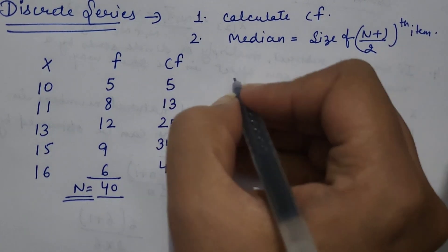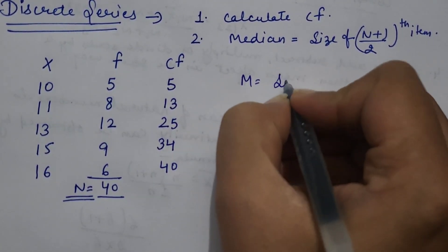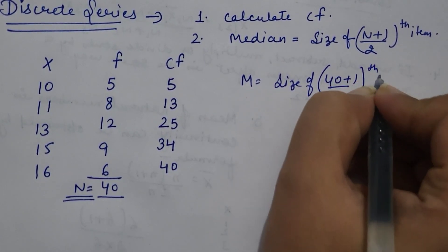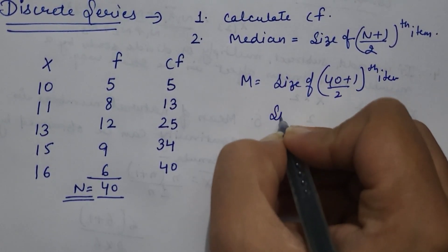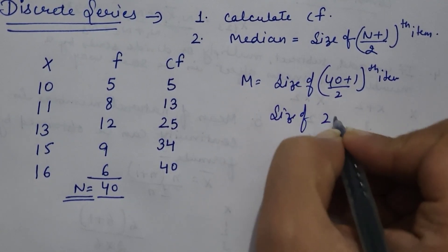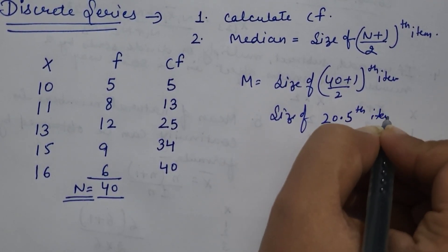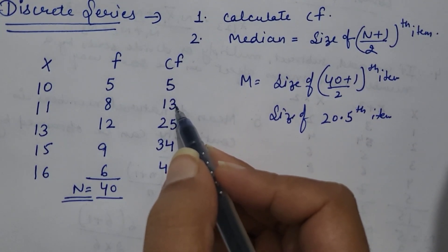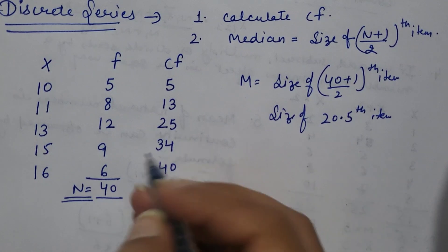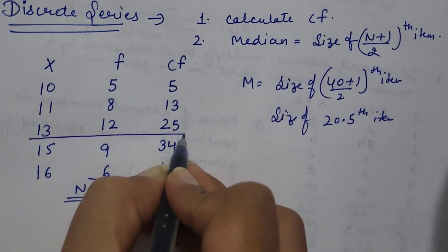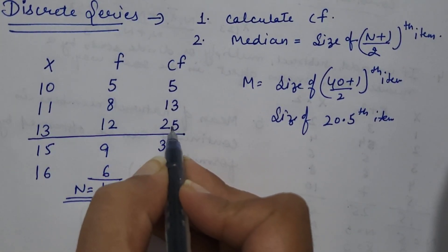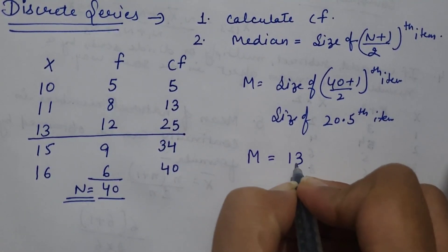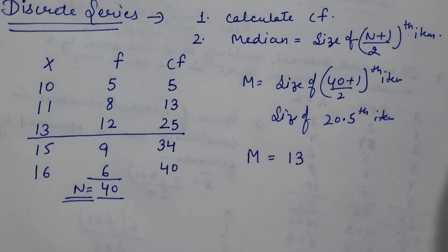Applying the formula, median equals size of 40 plus 1 by 2th item, which is the 20.5th item. Up to cumulative frequency 13, we have observations for value 11. Our 20.5th item falls within cumulative frequency 25, so the observation corresponding to 25 would be our median. Therefore, median here is 13.